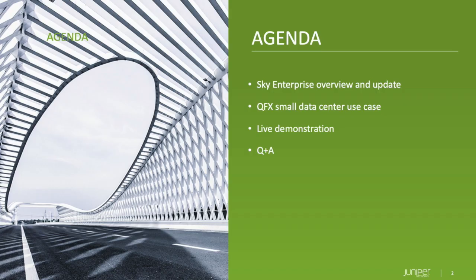We're going to go through some PowerPoint slides where Praful and I will talk about the solution, its components, and decision points on where you might use Sky Enterprise or other Juniper products to manage your data center. Then we'll look at the topology and components, followed by a live demonstration. The webinar runs about 30 to 40 minutes with Q&A at the end. The team is standing by in the chat — please put your questions in the On24 system and we'll get to those at the end.